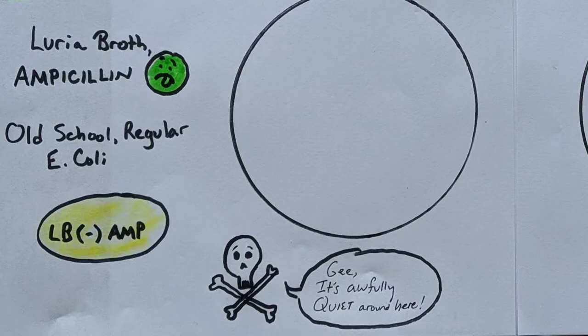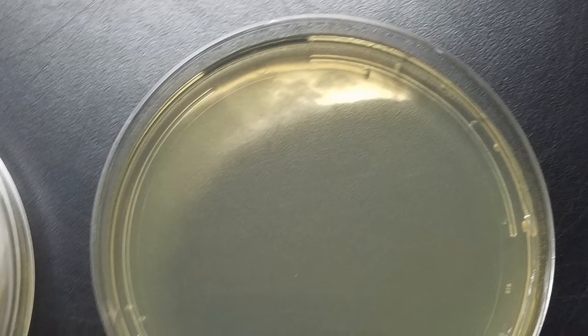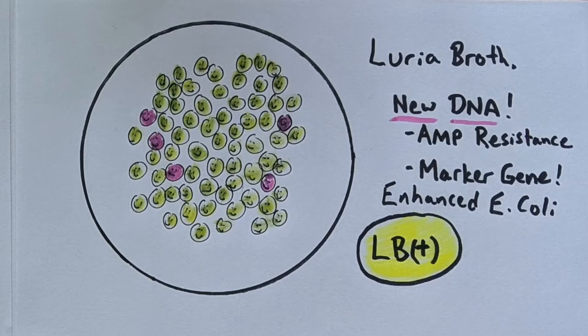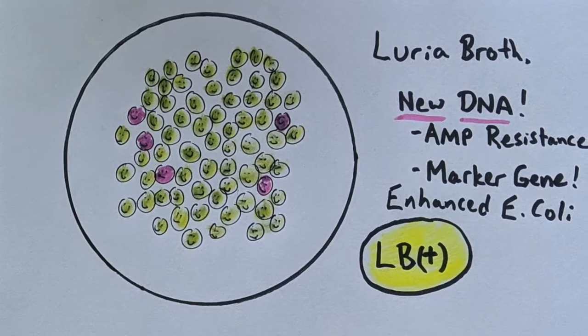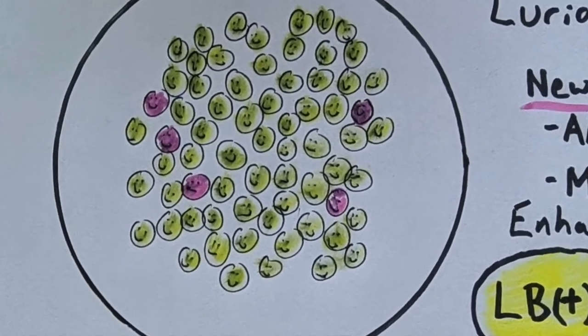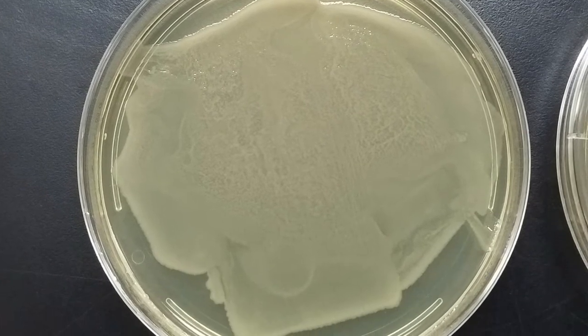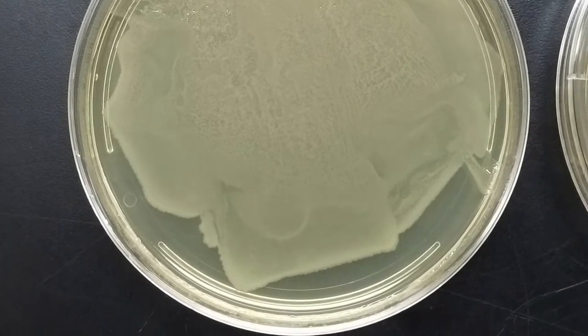LB minus AMP — awfully quiet around here. The ampicillin has killed every wild type bacteria. Since all we had was wild type bacteria, there are no bacteria left; they're all dead. LB plus AMP — this one's a little tricky. Remember there's only a certain amount of competence in taking up the new DNA. Even though you have genetically modified bacteria, they're vastly crowded out by the wild type bacteria. So you have lots of wild type and a few genetically modified bacteria living in good nutrition — they're going to party and divide like crazy and you'll have a lawn.